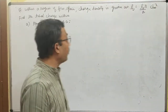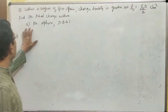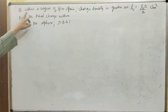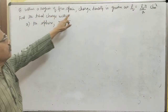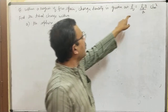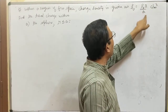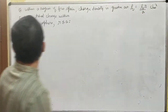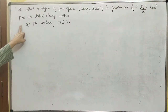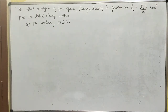We shall go to the next problem. This problem also has three parts. Within a region of free space, charge density is given as ρᵥ = ρ₀ · (r/a) coulombs per meter cube. Find the total charge within the sphere r ≤ a. This problem is in spherical coordinate systems.